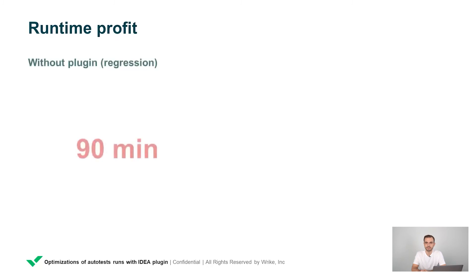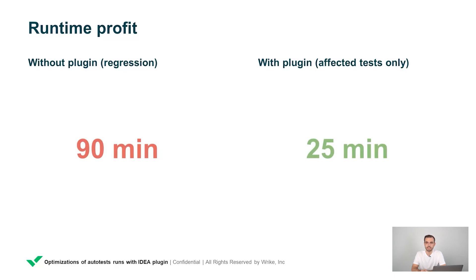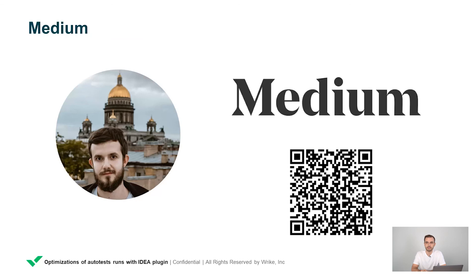A few numbers: without the plugin, our basic regression takes about 90 minutes. But when we run only affected tests, it takes only 25 minutes — an incredible improvement and we're really satisfied with this solution. My colleague and the author of this plugin, Daniel Timashov, wrote an article on Medium. If you're interested in this topic, I suggest you check it out. There you can find a lot of technical details about the plugin and even its open source version, so you'll be able to solve similar problems based on it.